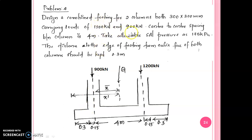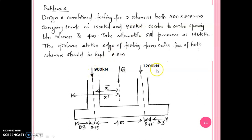We have loads of 1200 kN and 900 kN. The center to center spacing between the two columns is 4 m. The projection edge from the outer face of both columns is kept as 0.3 m. We will take Q1 as 1200 kN and Q2 as 900 kN. The conditions involve trapezoidal and rectangular footings.